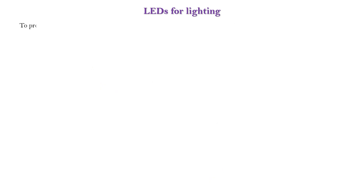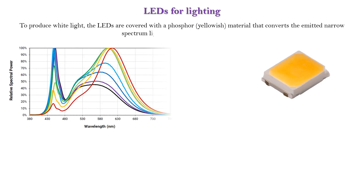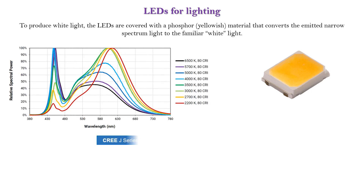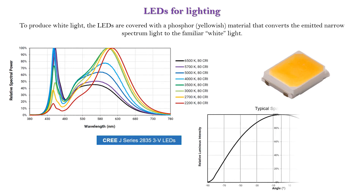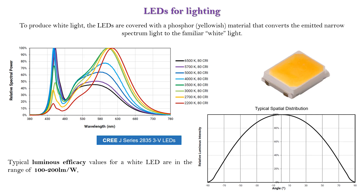To produce white light, the LEDs are covered with a phosphor — a yellowish material that converts the emitted narrow spectrum light to the familiar white light. Typical luminous efficacy values for a white LED are in the range of 100 to 200 lumens per watt, much higher compared to incandescent lamps and fluorescent tubes.